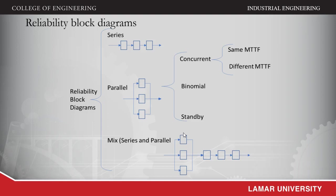For cases with parallel components, we have three types of behavior. One is the concurrent behavior in which all of them are working at the same time and a failure could happen in any one of them. We also have the binomial case — concurrent is just a special case of binomial. In the binomial case, you need at least a certain number out of the total. For example, if you have five components in parallel and need three, you compute the binomial distribution for the probability of having at least three out of five working. The concurrent case is simply when the number needed is one.